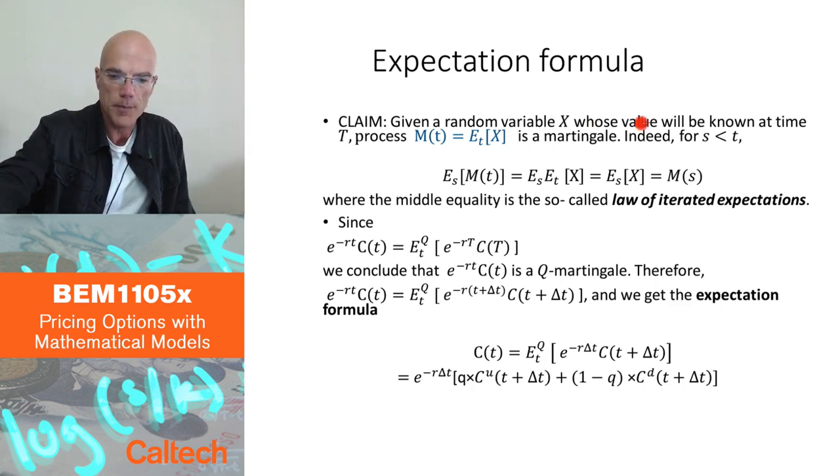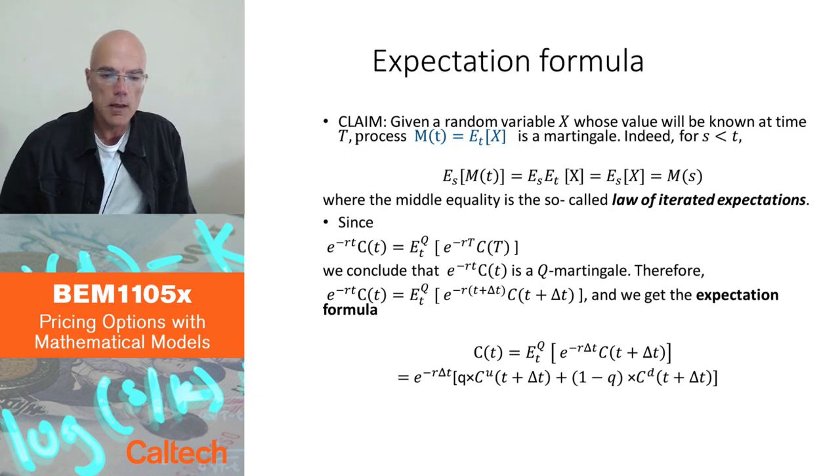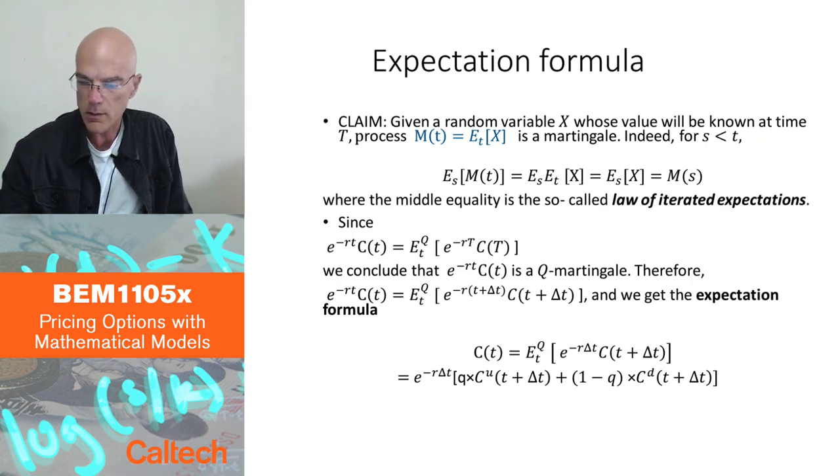If I have a given random variable that will be known, will no longer be random at time capital T, so think of an option or something like that. And if I define m of t to be conditional expectation of that random variable from the point of view of today, and then I vary t, right? So this is going to be a process in t, a random process, the conditional expectation for some future time is still going to be random. The claim is that this process is a martingale. And this is a standard way to get a martingale. You take conditional expectation for every time t of some future random payoff, for every time t less than or equal to capital T.